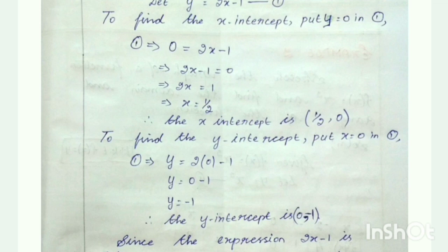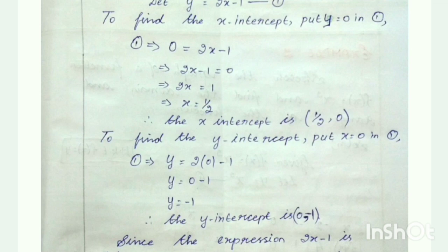Similarly, to find the y-intercept, substitute x equal to 0 in the first equation. So y is equal to 2 into 0 minus 1. While solving this, 2 into 0 is 0, so 0 minus 1 gives y is equal to minus 1. Therefore the y-intercept value is (0, minus 1). Now we have 2 points: (1/2, 0) and (0, minus 1).